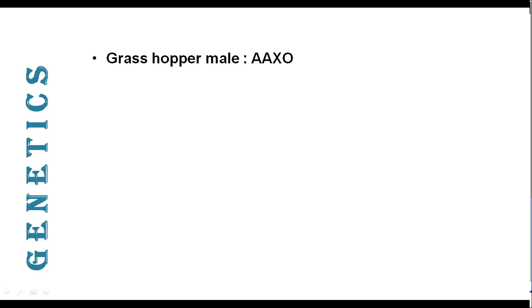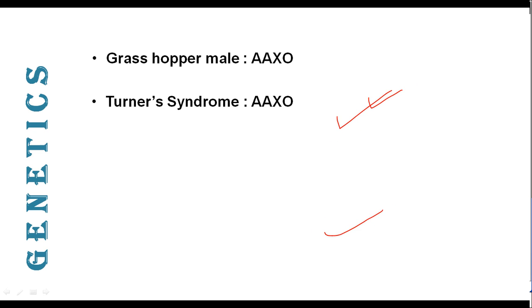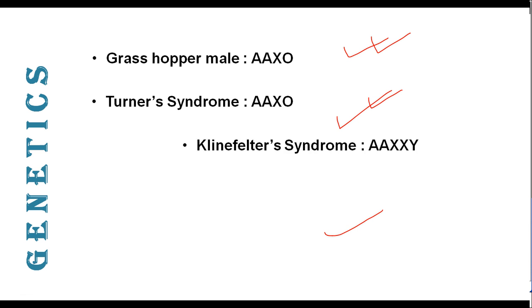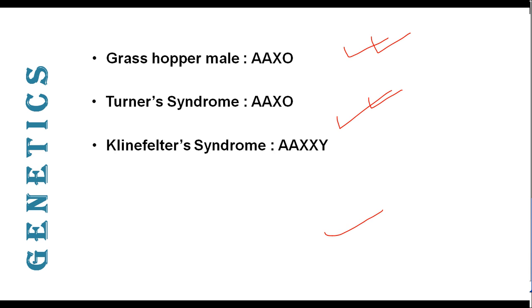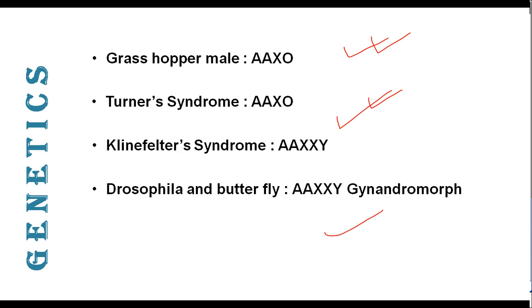In the case of grasshopper, AAXO is a male, but in Turner syndrome there is also AAXO, yet the person is a female — so these two cases are not similar. AAXO in grasshopper is a normal male; here AAXO is an abnormal, infertile woman. In Klinefelter syndrome there is AAXXY — the X-to-A ratio is two to two, which equals one, so it should be a female, but due to the presence of Y, it has become a male. In Drosophila and butterfly, if AAXXY is present, they have gynandromorphs — meaning half the body is male type and the other half is female type.